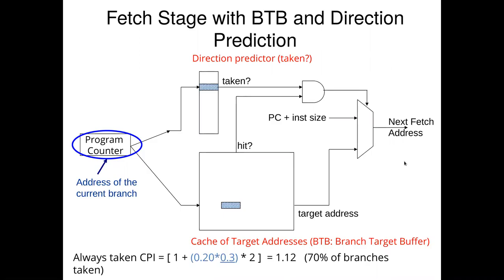Using the same example with a 70% taken rate and 20% of instructions being branches: if this black box always outputs that we take the branch, then 30% will be mispredicted. That gives us 0.2 × 0.3 × 2 stalls, resulting in a CPI of 1.12. This is nice because we don't have to wait to calculate our target address — it's already cached. We don't have to wait until the ALU stage or elongate our decode stage.